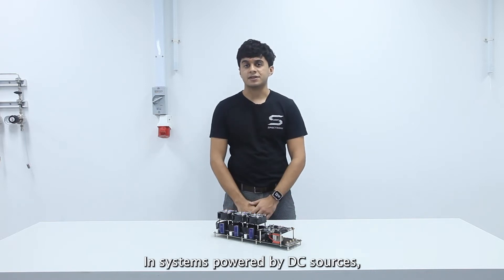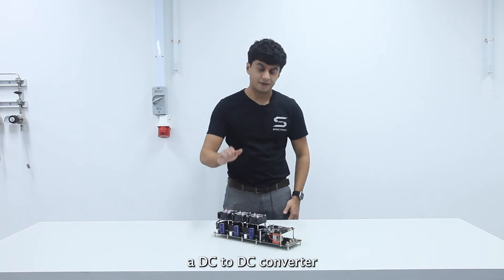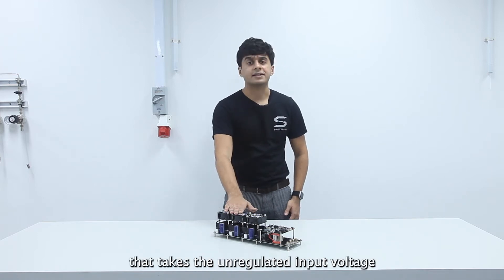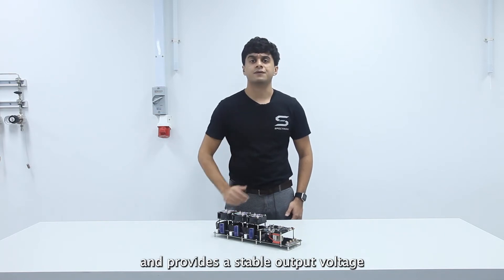In systems powered by DC sources, such as batteries or hydrogen fuel cells, it is necessary to have a DC to DC converter that takes the unregulated input voltage and provides a stable output voltage to the load.